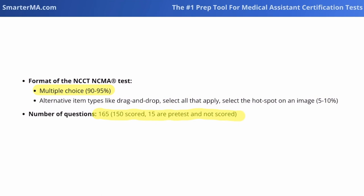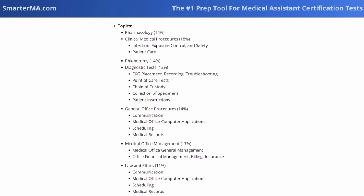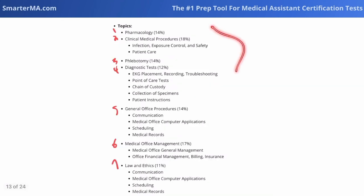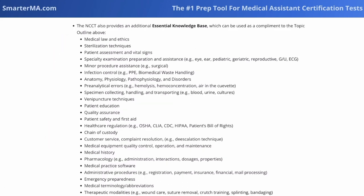The test is going to be 150 scored questions. They're also going to give us 15 pretest questions which don't contribute to our score — these are new questions the NCCT is testing. The test plan breaks down the NCCT NCMA into seven topics: pharmacology, clinical medical procedures, phlebotomy, diagnostic tests, general office procedures, medical office management, and law and ethics. The NCCT also provides an additional essential knowledge base, which outlines topics you should know going into the exam and overlaps completely with the test plan topics.